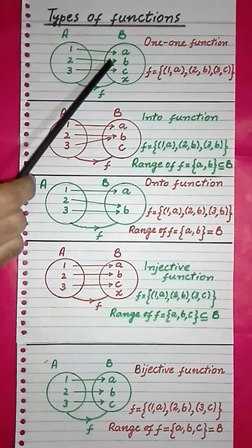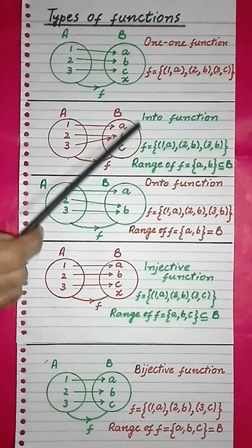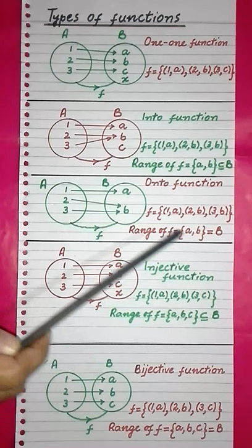A function is into if the range of the function is smaller than the co-domain. Like here, this is the range and this is the co-domain, and the range is smaller than the co-domain. A function is onto if the range of the function is equal to the co-domain. Like here, the range is equal to the co-domain.